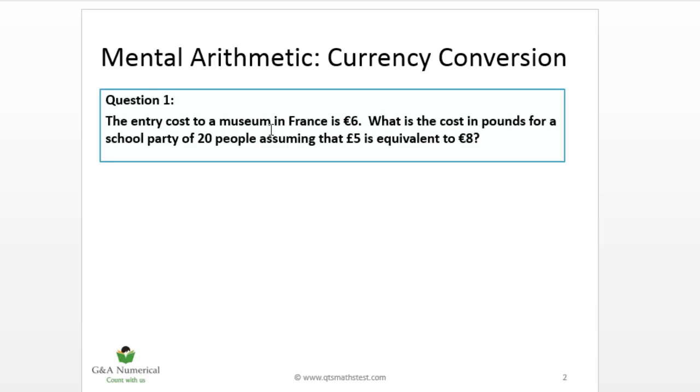The first thing we have to do is work out how much money got spent and then think about converting that into pounds. So that's just 6 euros times by 20 people. So 6 times 2 would be 12, so 6 times 20 is 120 euros. So 120 euros is our target amount. And you always, with this type of question, write down the conversion rule that they give you within the question. So here that means 8 euros is equivalent to 5 pounds.